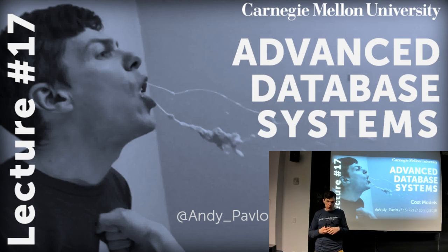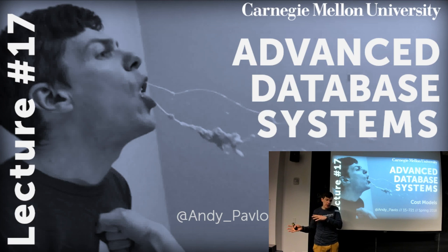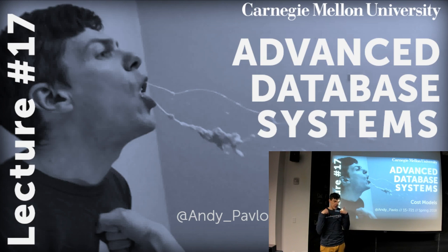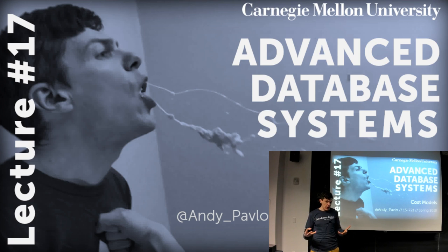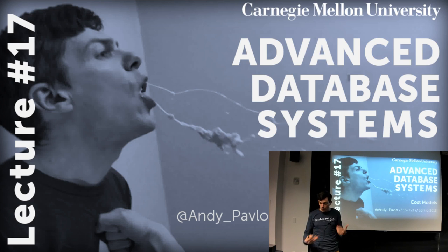This is the last lecture on query optimization, and it's a very important one because you have the cost models you're going to use to figure out whether one plan is better than another. The previous two lectures were about doing the search and transformations to find different query plan alternatives — different physical and logical query plans equivalent to the original. The cost model is necessary to figure out whether one plan is better than another so you can choose from all the alternatives.